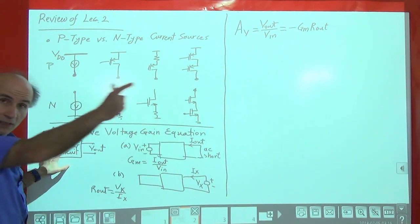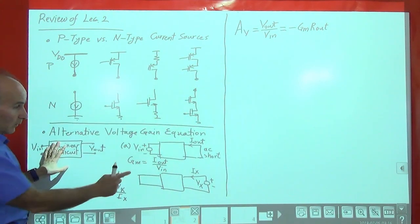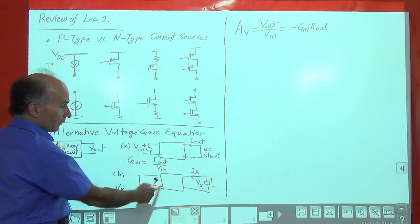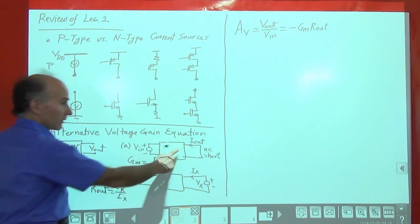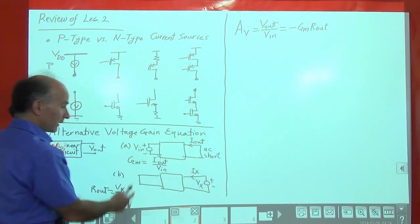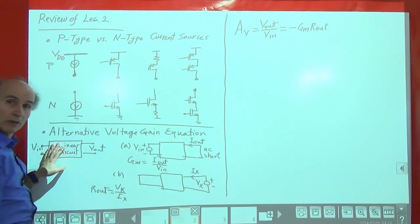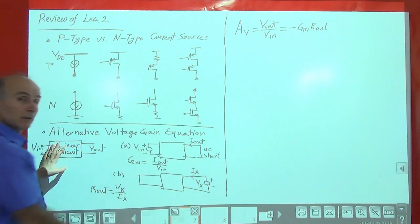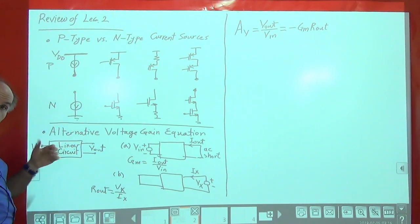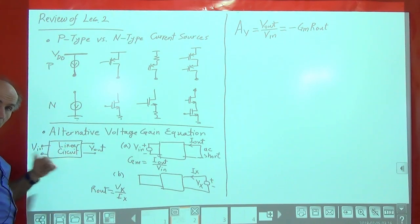In step two — something we have seen in Electronics 1 — we find the output resistance of the circuit, like the Thevenin resistance. For that, we set all independent sources to zero, apply a voltage at the output, and measure the resulting current. That ratio gives us the output resistance.